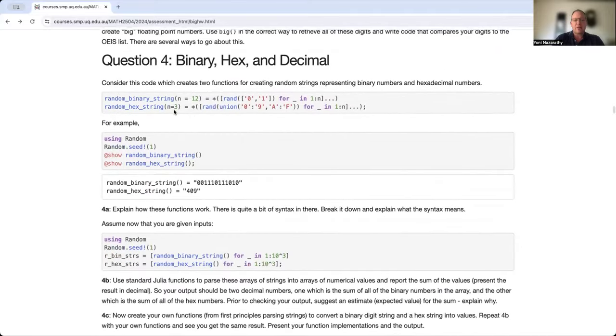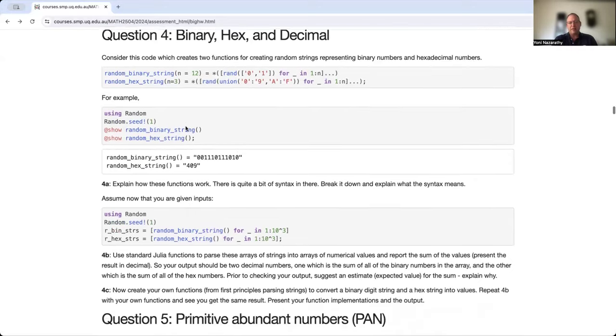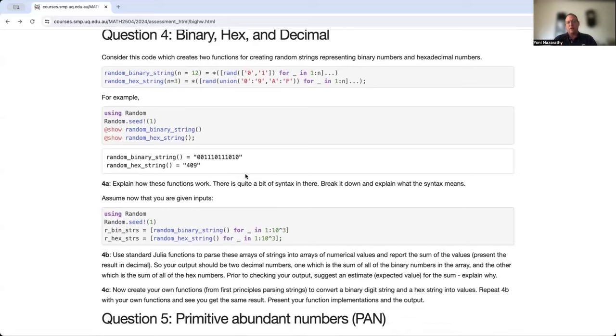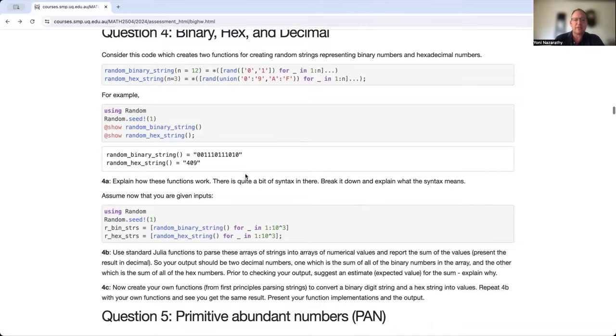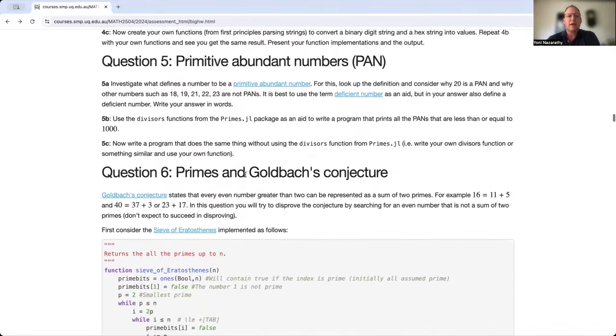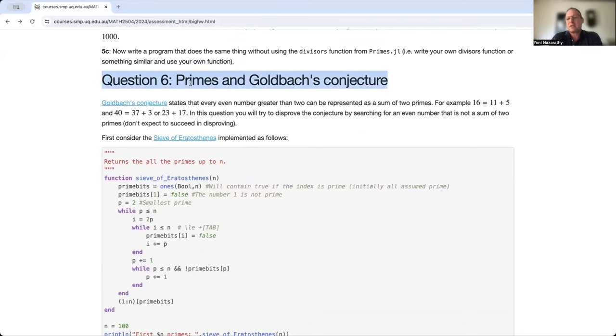Question four is a standard question, but it's kind of very important for your basic computer engineering, computer science knowledge. It's just taking a string and converting it to a string that has a binary or a hexadecimal number and converting it to the numerical value. That's kind of the essence. Dealing with that will put you in the mindset both of string parsing and of binary values and hexadecimal values, both of which are fundamentally important. Question five deals with this kind of number theory concept, primitive, adapt, abundant numbers. You need to read what that means and define it and then do a bit of coding. At first you'll do the easier thing, which is taking the divisor's function from primes.jl, but then you'll write your own.